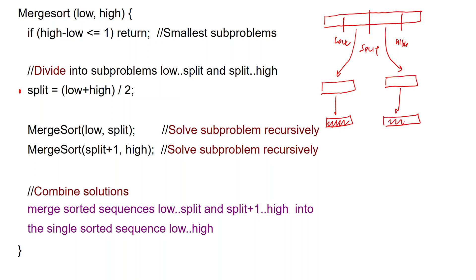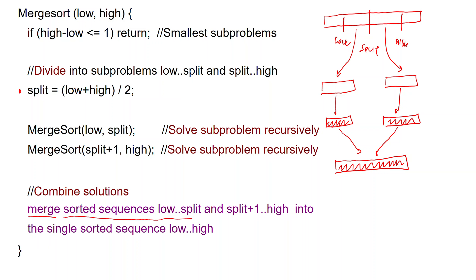These two subproblems are sorted recursively. Then the two sorted sequences must be merged into a single sorted sequence. The crux of the merge sort algorithm is this merge operation, which takes two sorted sequences — low to split, and split plus one to high — and merges them into a single sorted sequence.